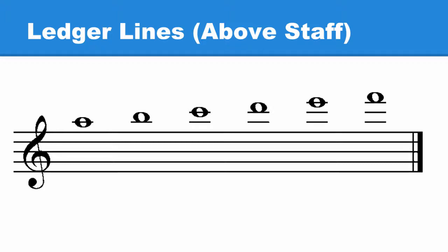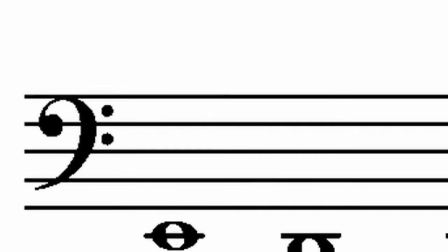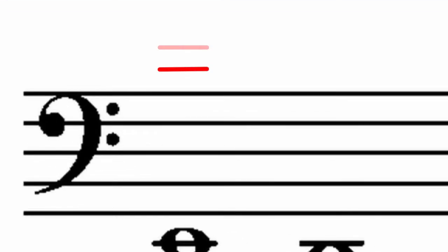Ledger Lines. When notes are written above or below the staff, ledger lines are used to extend the range of the staff, as if the staff had more than five lines. To make a ledger line, draw a short line parallel to the staff.